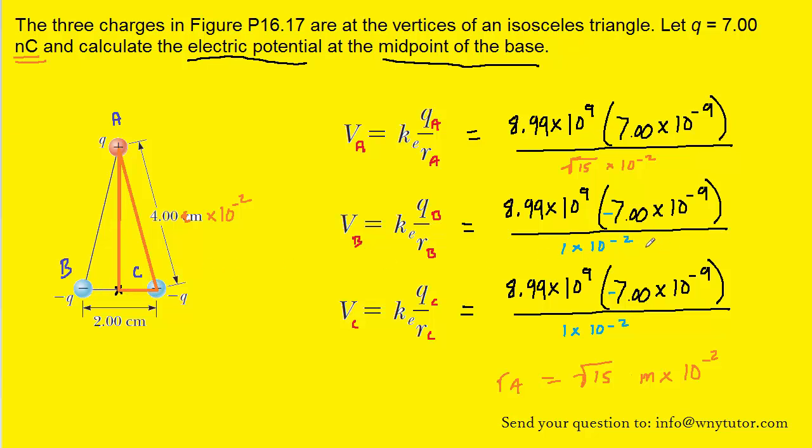Also notice that the charge on B and C are both negative charges. As we can see from the diagram, they were indicated as being negative.